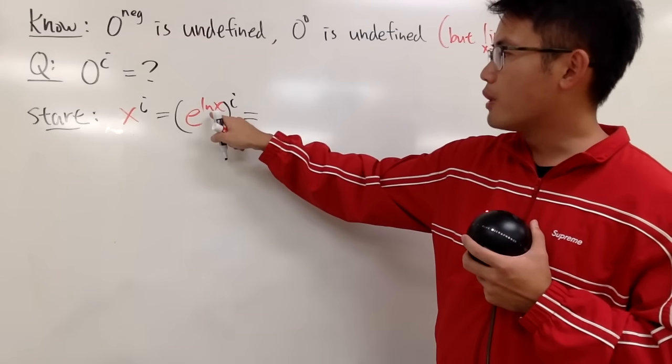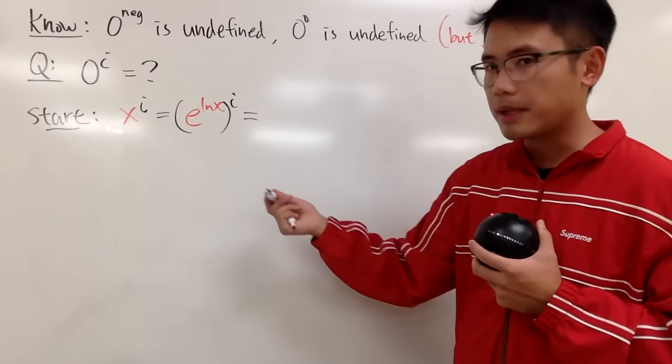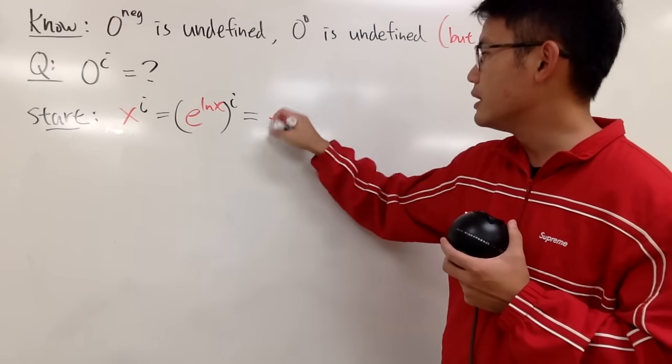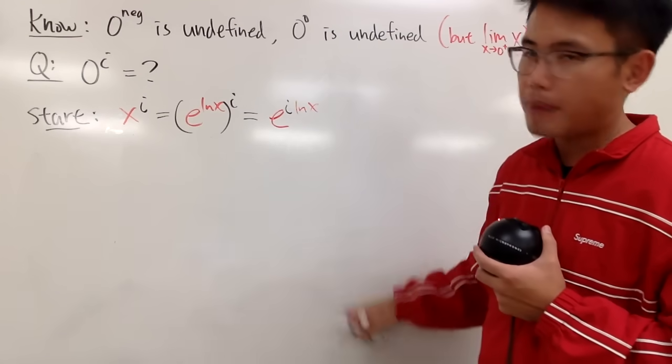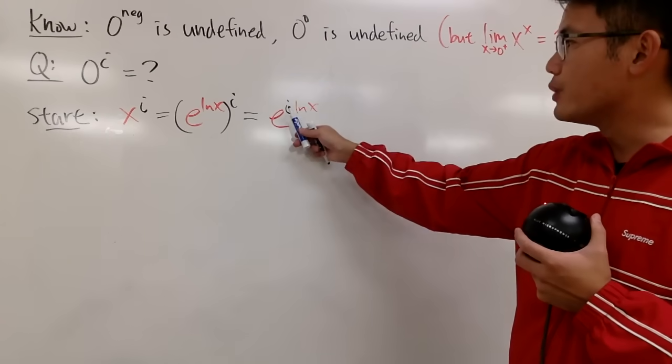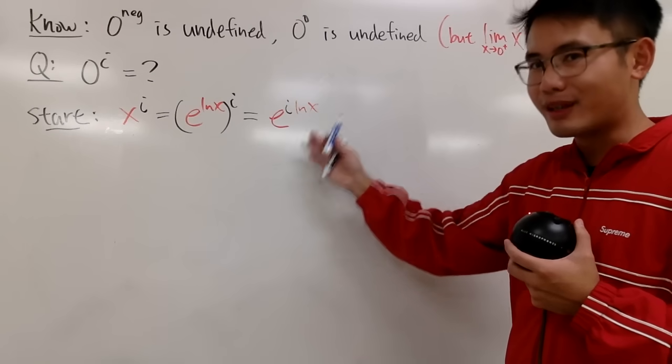And then, of course, when you have this power and that power, you can just multiply all the powers, and you get e raised to the i times ln(x) power. And when we have e to the i times something, power like this.